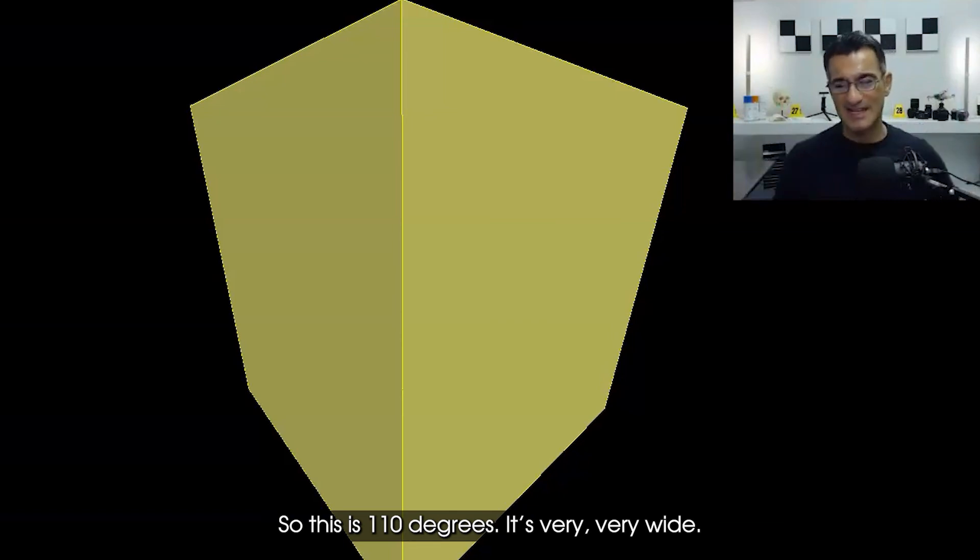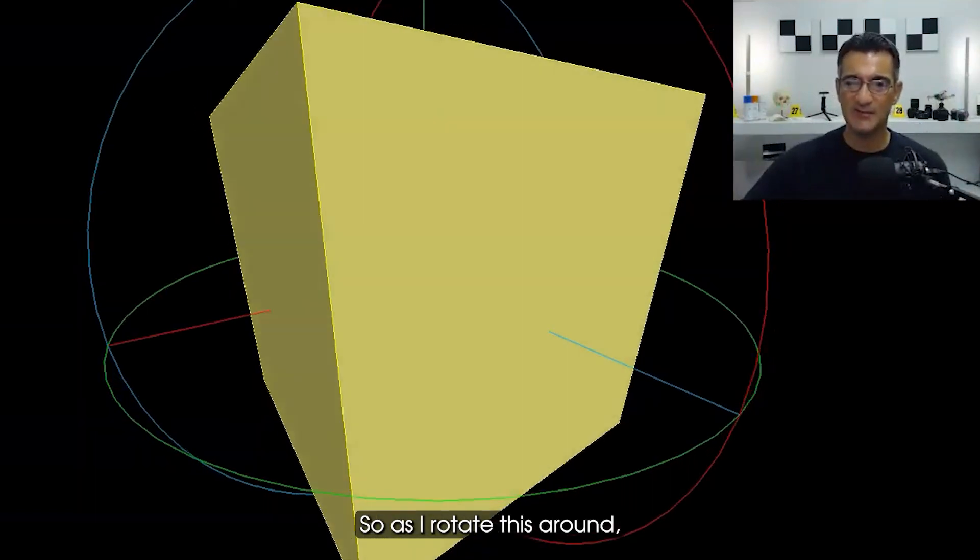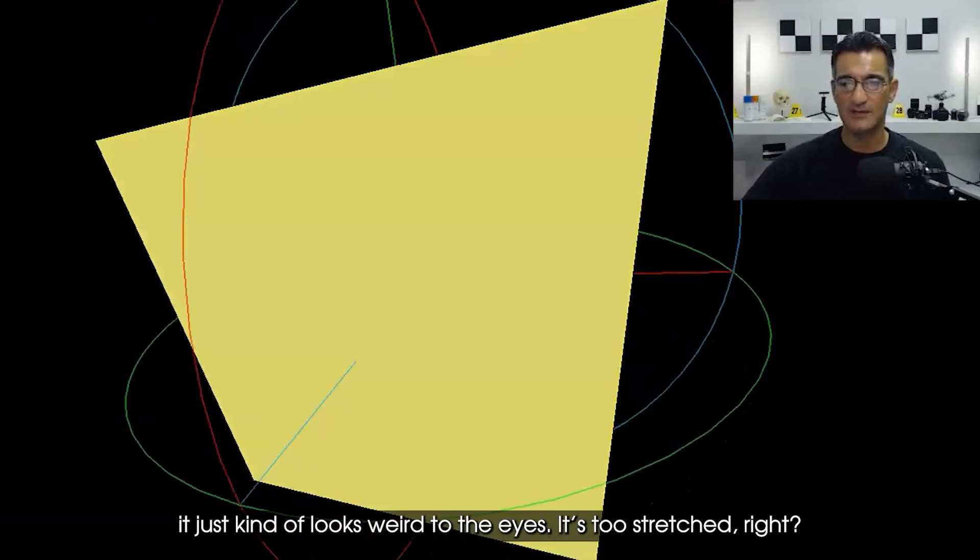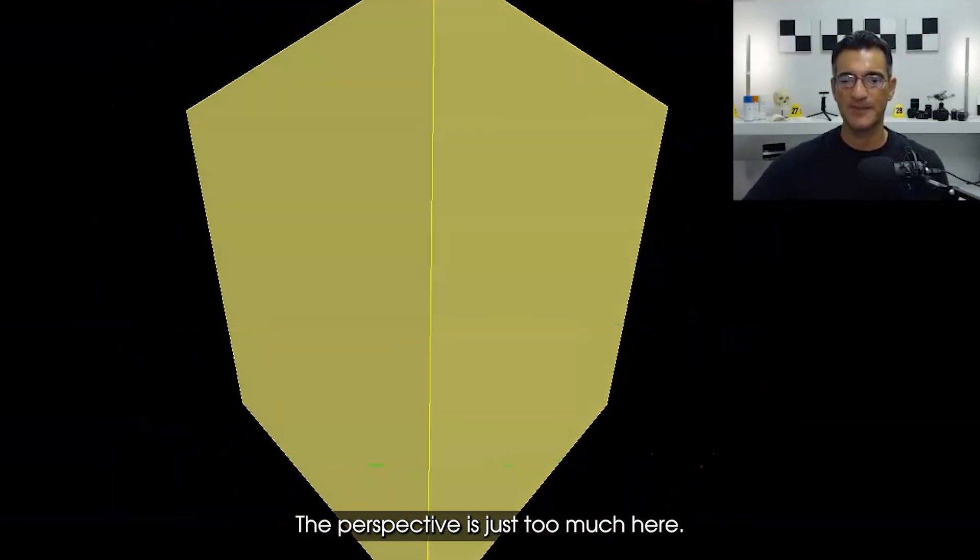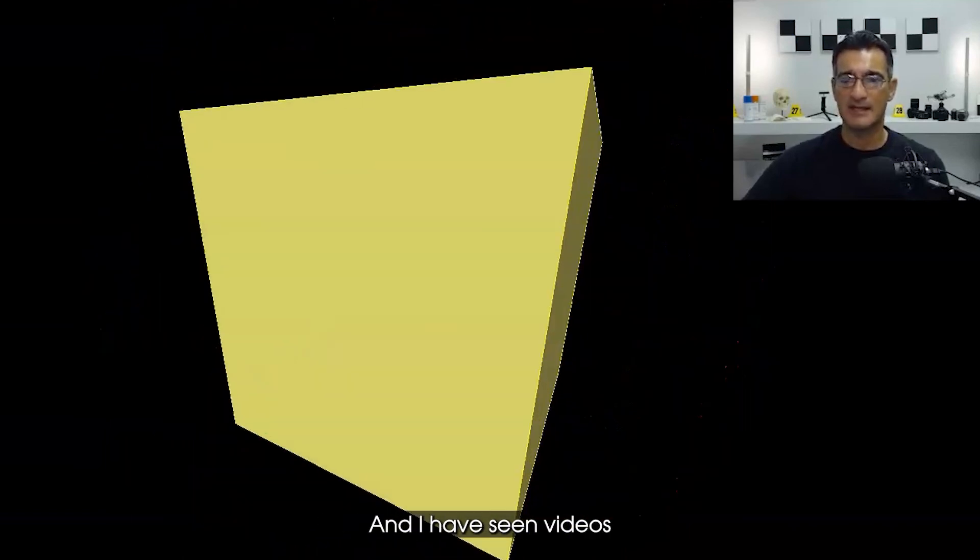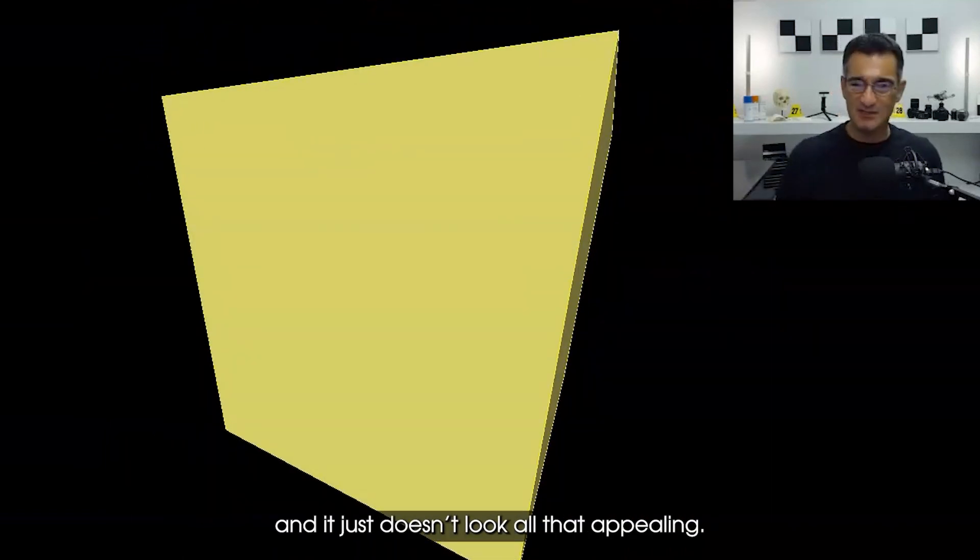You'll see what the problem is here - this looks highly distorted. This is 120 degrees, it's very wide and it doesn't look that great. As I rotate this around it just kind of looks weird to the eye. It's too stretched - the perspective is just too much here. You need to keep this in mind. I have seen videos where people do this before and it just doesn't look all that appealing.